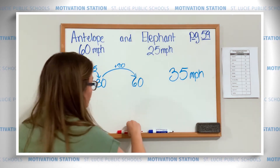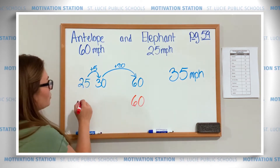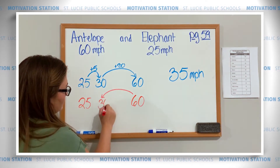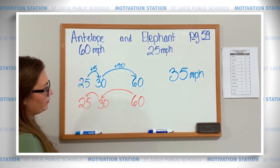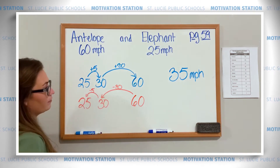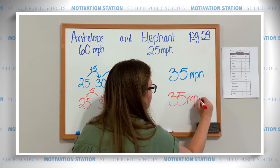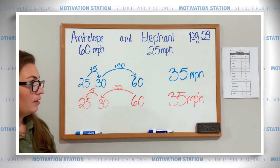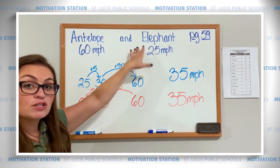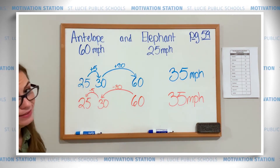If you prefer to show this with subtraction, you totally can. You would start with your 60 and know that you're trying to get down to your 25. I would still do a big jump to 30 and a little jump to 25. 60 minus 30 is 30, and 30 minus 5 is 25. My answer is still 35 miles per hour. That means the antelope goes 35 miles per hour faster than the elephant, or the elephant goes 35 miles per hour slower than the antelope. Either way, the difference is 35.